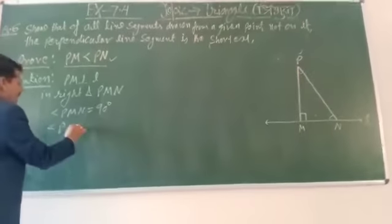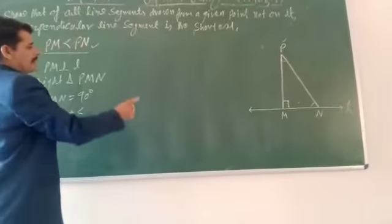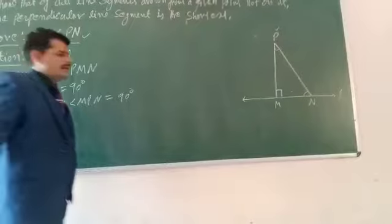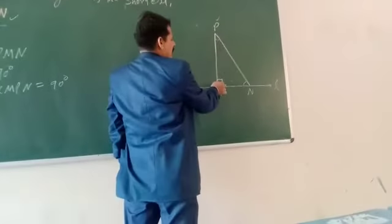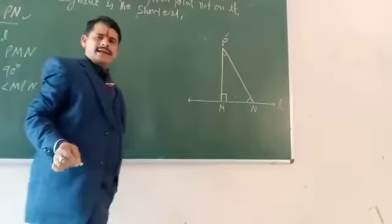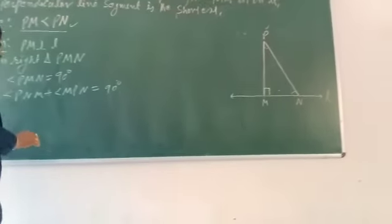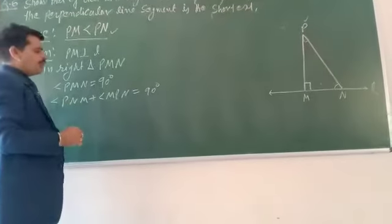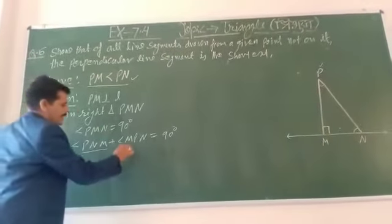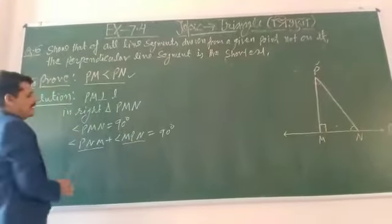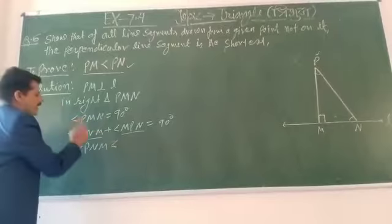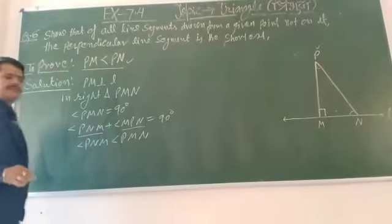Angle PNM plus angle MPN equals 90 degrees. This is 90 degrees and this is 90 degrees. If you have three angles, the sum is 180 degrees. So angle PNM is less than angle PMN.